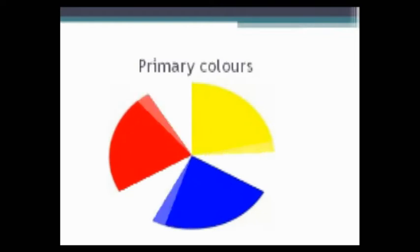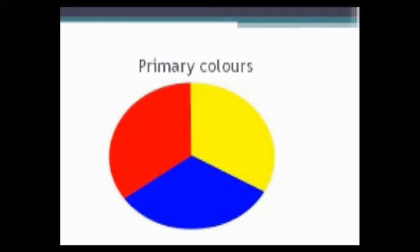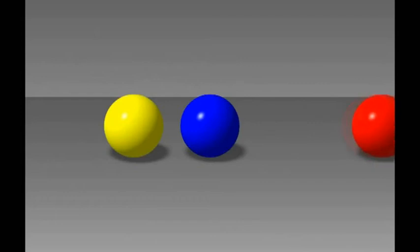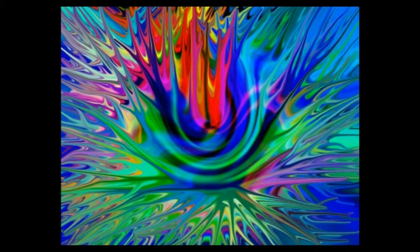What are primary colours? They are three colours: red, blue and yellow. All these colours are the main colours, and the other colours are combinations of these three.